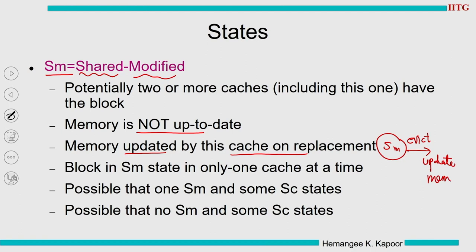When in SM state and we evict the data block, we update the memory — so memory gets written only when we evict from SM. There is at most one cache in the system in the SM state; you cannot have two caches in SM. There can be several caches in SC, and exactly one — or at most one — processor will have SM while others are in SC.